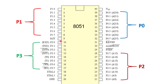The next pin is pin number 9 — the RST pin, which stands for reset. The reset pin is used to reset the microcontroller to its initial value. This is an active-high pin, so when this pin goes high, the microcontroller resets and all registers and flags return to their initial values.